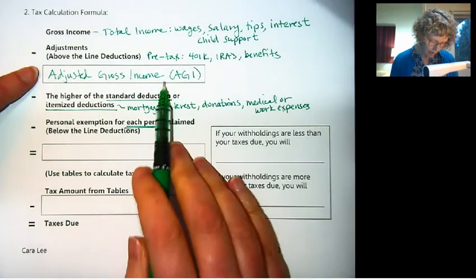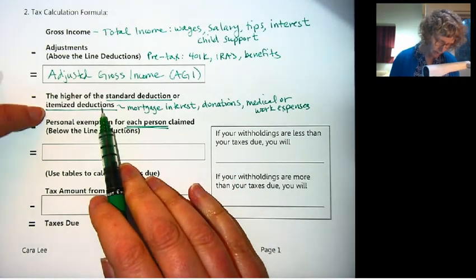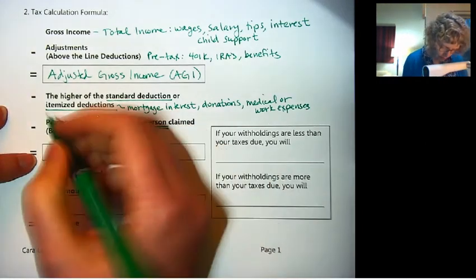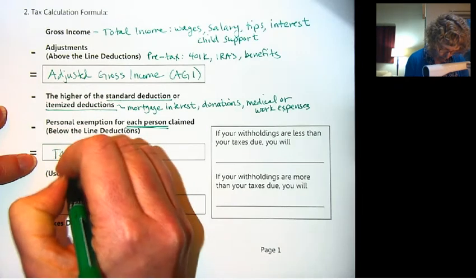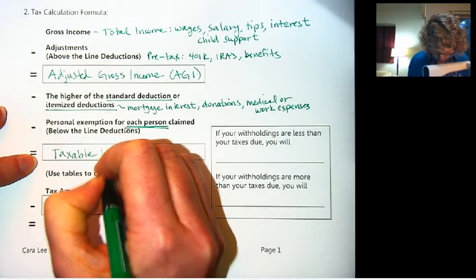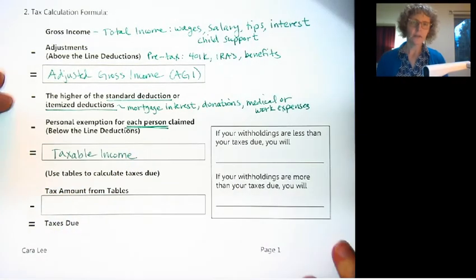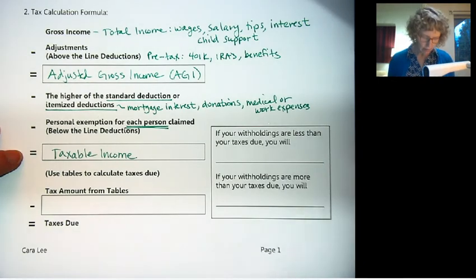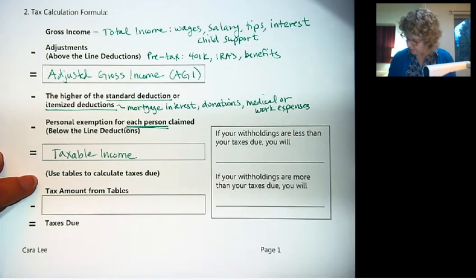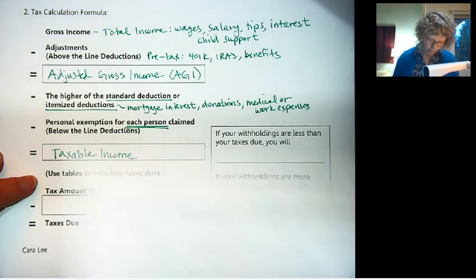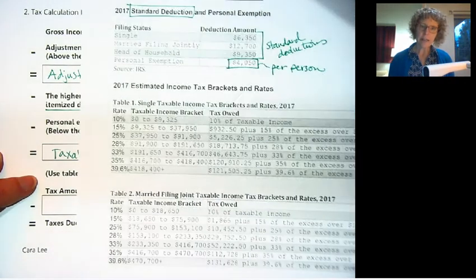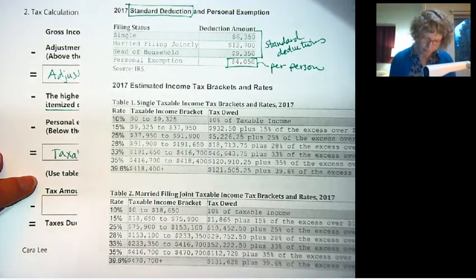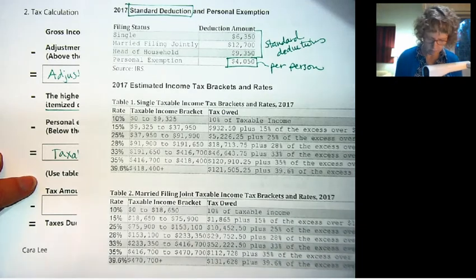So once you take out either the standard deduction or the itemized deduction and your personal exemption or exemptions, that is equal to your taxable income. So taxable income is actually what your taxes are calculated on, and there are some tables. We'll go through, we'll look at this when we do an example. But these are tax tables, or computer software just calculates it for you, to tell you how much tax that you actually owe.